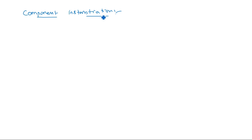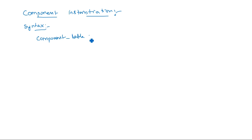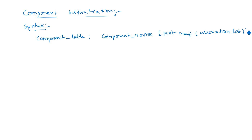Component instantiation means a component instantiation statement defines a subcomponent of the entity. The syntax is: [component_label] : [component_name] port map ([association_list]). This is the way to instantiate a component which has already been declared — you call it here using this syntax.